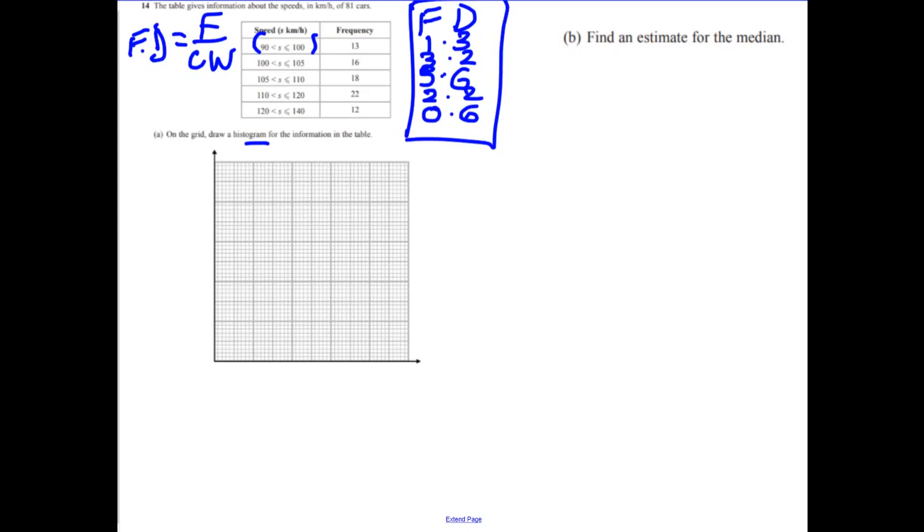Now we go and draw our histogram. So when we draw a histogram, it goes from 90 to 140. So let's just put those points in. So we've got 90, we've got 100, 110, 120, 130, 140. That's not too bad. So this here is the speed.